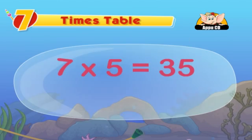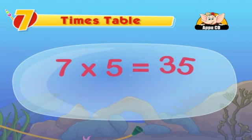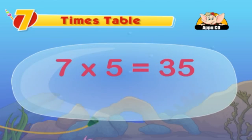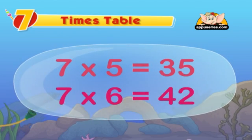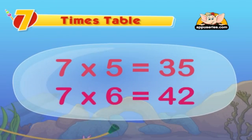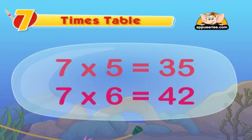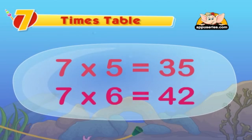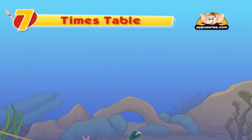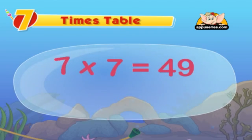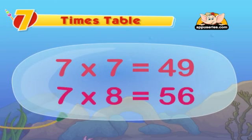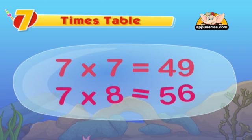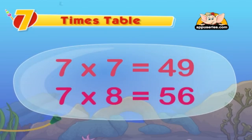7 into 5 is equal to 35. 7 into 6 is equal to 42. Now we are halfway through. 7 into 7 is equal to 49. 7 into 8 is equal to 56.